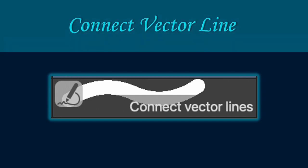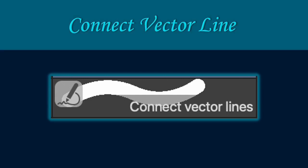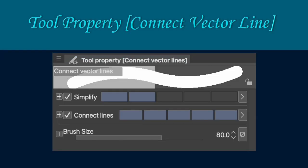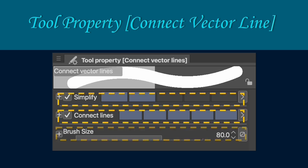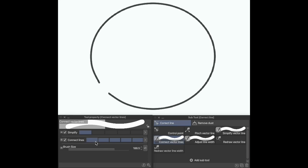The connect vector line tool links the separate points of the lines on your drawings or figures. The tool property of connect vector line allows you to simplify, connect lines and navigate the brush size. Here is a short video clip to show you the function of connect vector line.